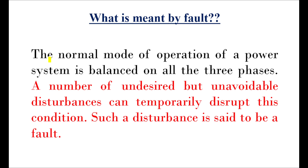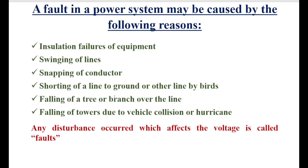A fault is defined as a disturbance in the normal mode of operation of a power system, which is balanced on all three phases. A number of undesired but unavoidable disturbances can temporarily disturb this condition. Faults may be caused by installation failures, swinging of lines, snapping of conductors, shorting of a line to ground by birds, falling of a tree over the line, or falling of towers due to vehicle collision or hurricane.